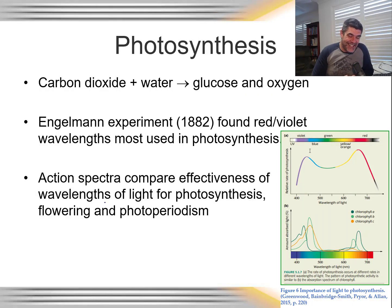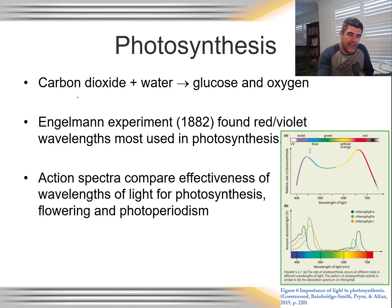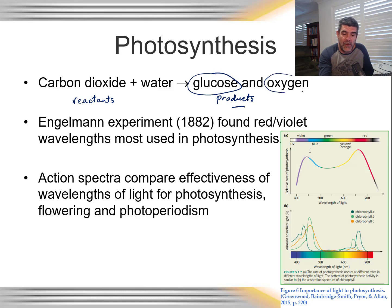You're probably sick of seeing these equations by now, but they are very important and we'll keep referring to them. Carbon dioxide and water are the reactants in photosynthesis. Glucose and oxygen are the products. So we're focusing on the products of photosynthesis — how the glucose and oxygen are produced and where they go once they've been produced.